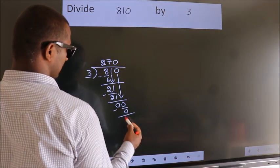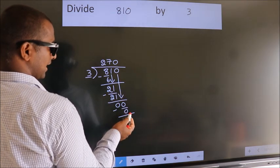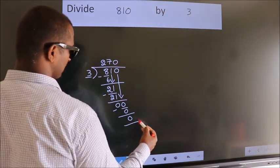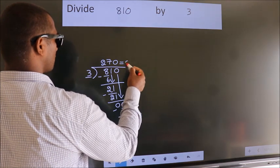Now we subtract. We get 0. No more numbers to bring down. So we stop here. This is our remainder. This is our quotient. Let's get back to you.